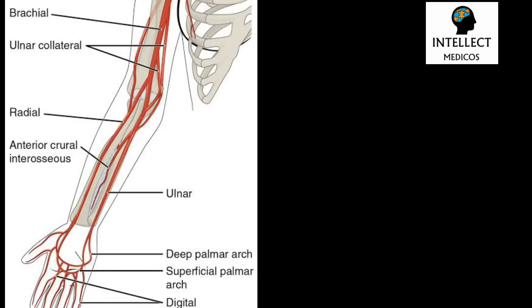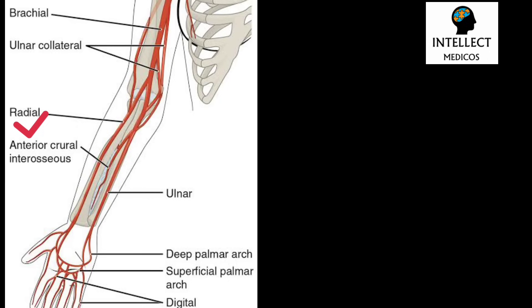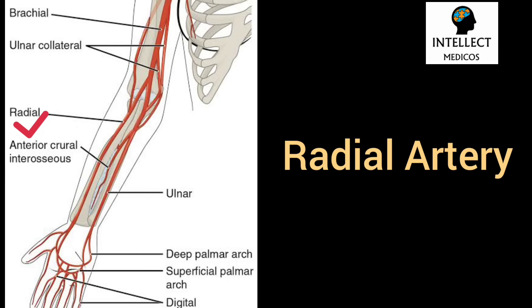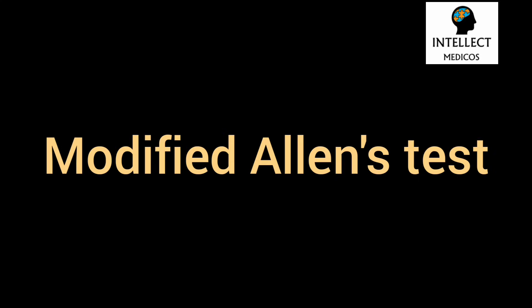ABG sampling can be performed from various sites: the radial artery, brachial artery, femoral artery, or dorsalis pedis artery. The most preferred is always the radial artery because it is the most superficial and has good collateral circulation.